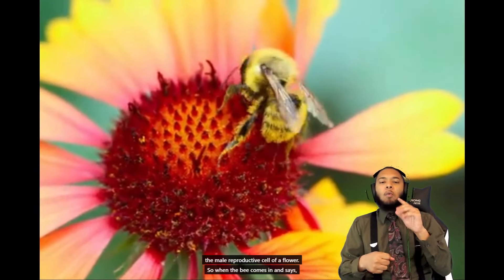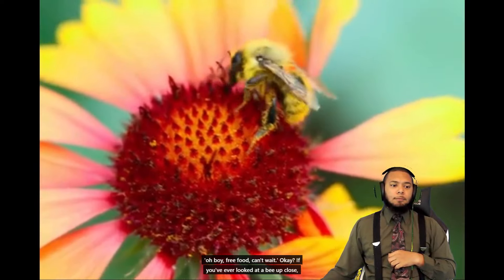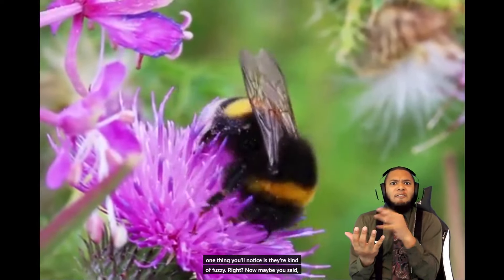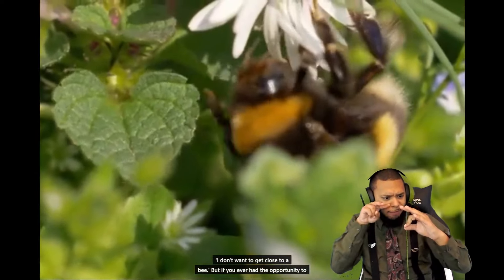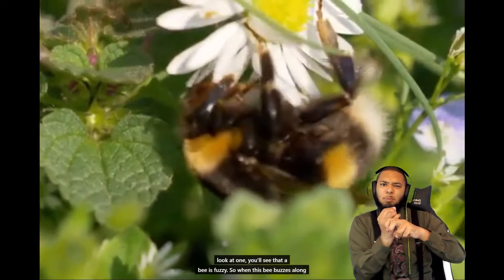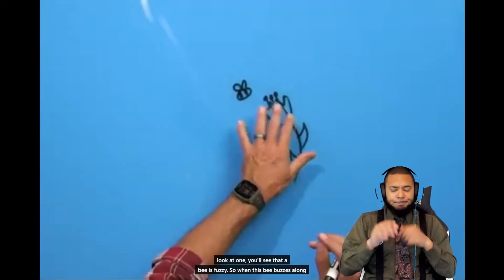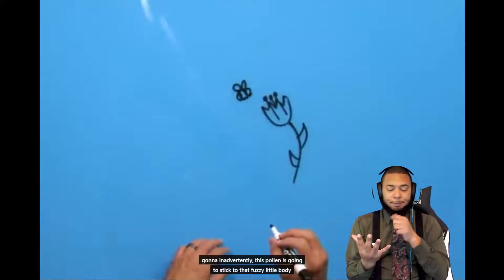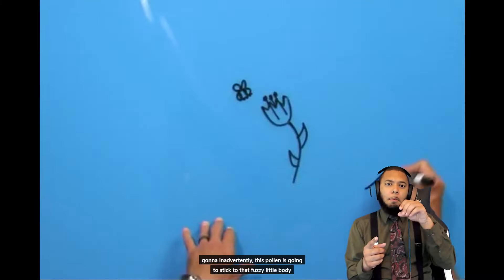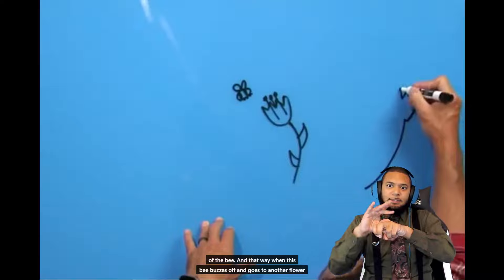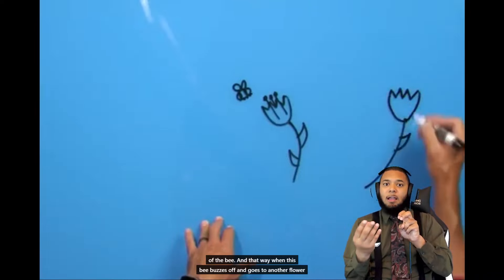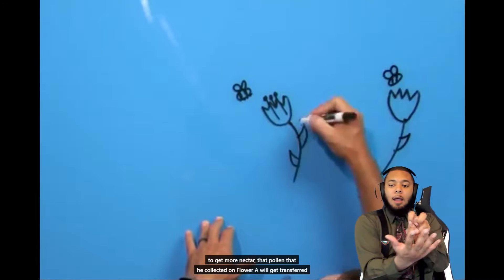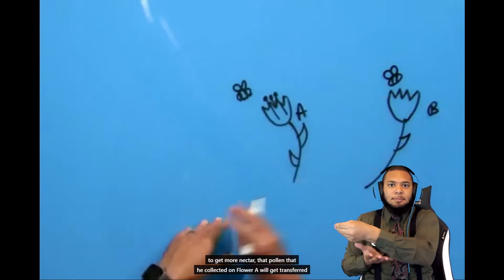So when the bee comes in and says 'oh boy, free food, I can't wait' — if you've ever looked at a bee up close, one thing you'll notice is they're kind of fuzzy. So when this bee buzzes along and lands on this flower, it's going to get some nectar, but it's also going to inadvertently have that pollen stick to its fuzzy little body. That way, when this bee buzzes off and goes to another flower to get more nectar, the pollen collected on flower A will get transferred to flower B.